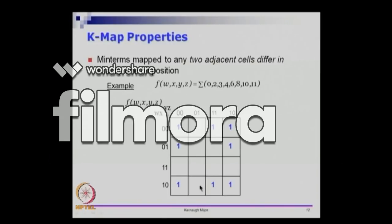If we take these two cells: this corresponds to minterm m9 (1001) and this corresponds to m11 (1011). m9 and m11 differ in exactly one bit position, namely the third bit — y is the only term that differs; in one place y is 0, and in the other column y is 1.